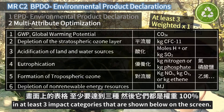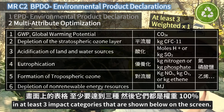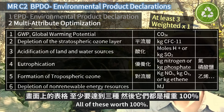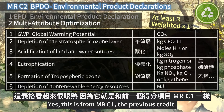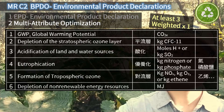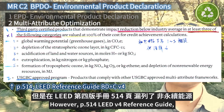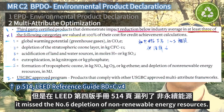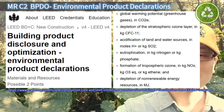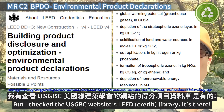Impact reduction must be in at least three impact categories shown on screen. All of these are worth 100%. This may look very similar — yes, it is from MRC1, the previous credit. However, on page 514 of the LEED Reference Guide, it is missing number six: depletion of non-renewable energy resources. I checked the USGBC website and LEED Library — it is there.